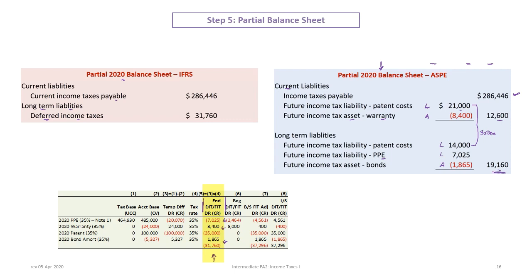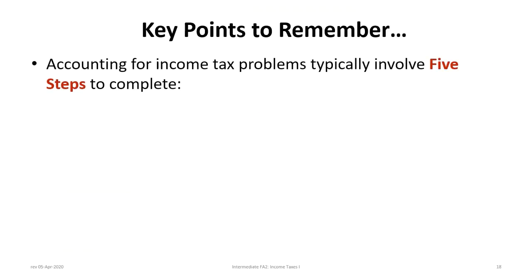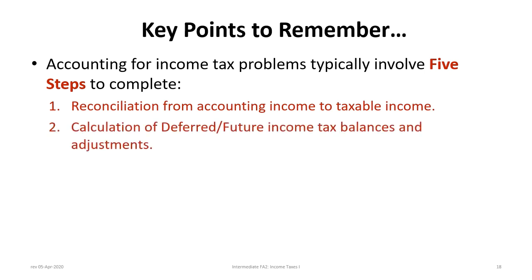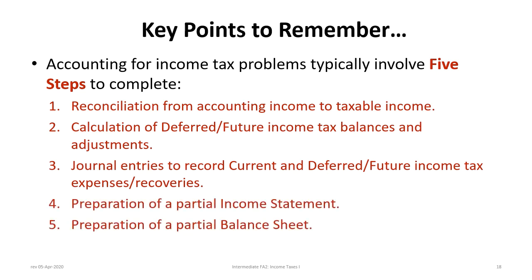Some key points to remember: accounting for income tax problems typically involve five steps. First, reconciliation from accounting income to taxable income. Second, calculation of deferred or future income tax balances and adjustments — usually using a table. Third, prepare journal entries to record current and deferred or future tax expense or recoveries. Fourth, prepare a partial income statement. Fifth, prepare a partial balance sheet.